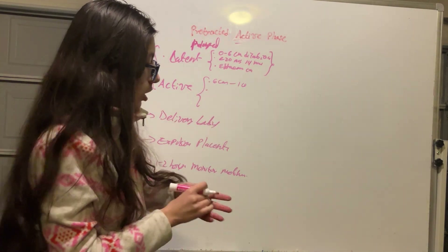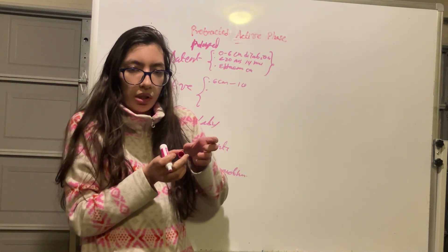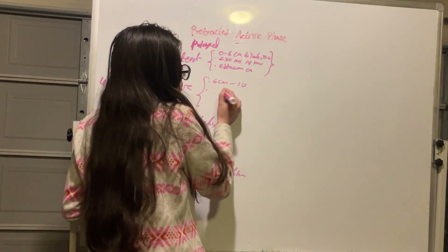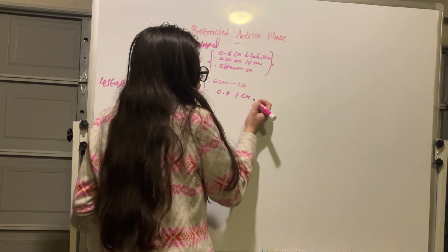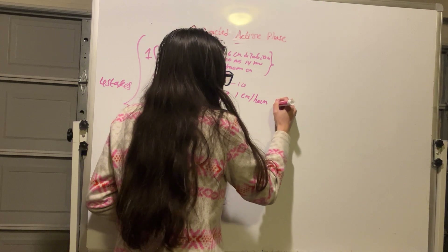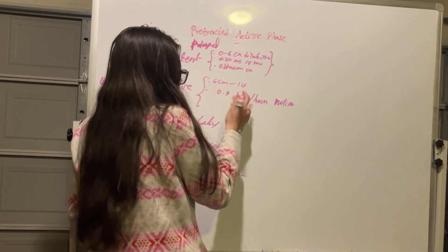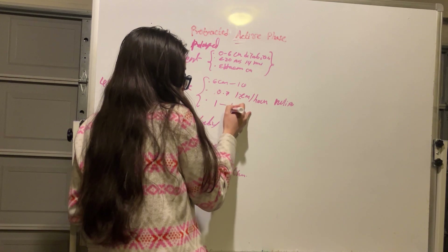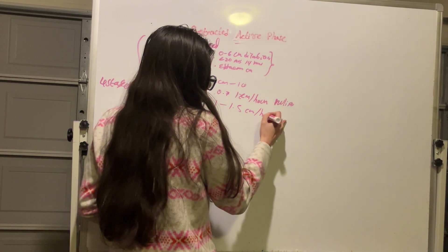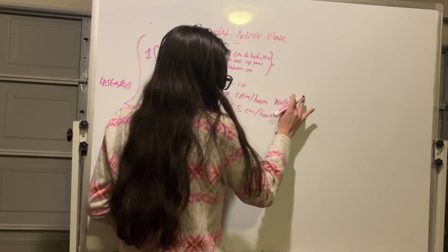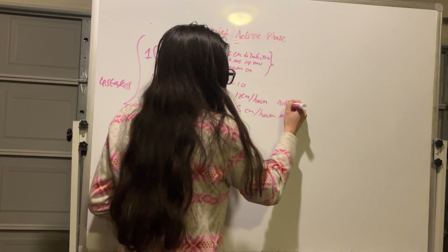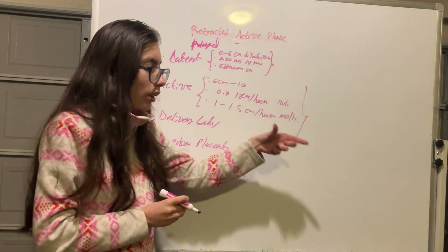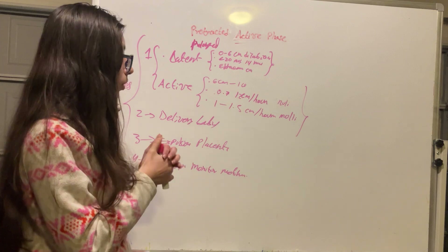During the active phase, the rate of cervical dilation should be at least 0.7 to 1 centimeter per hour in a nulliparous woman, and 1 to 1.5 centimeters per hour in a multiparous woman. This is the normal rate at which we should be seeing continuing cervical dilation.